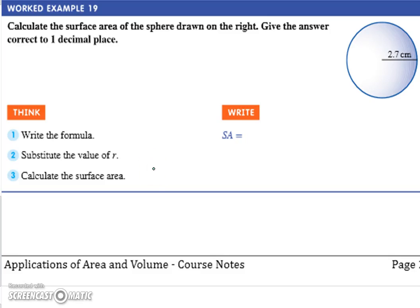Alright, so we're now doing the surface area of a sphere. As discussed, we have a formula for it, which is nice for you guys. All you get given is the radius. How can you tell if this is a sphere or a circle?